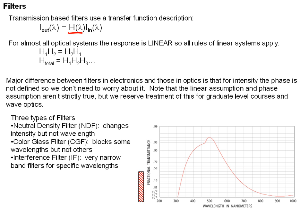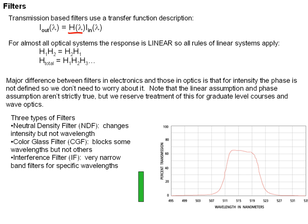Interference filters, on the other hand, are like color glass filters. They're made through a very different process, and they have a very, very narrow transmission band compared to other types of filters.